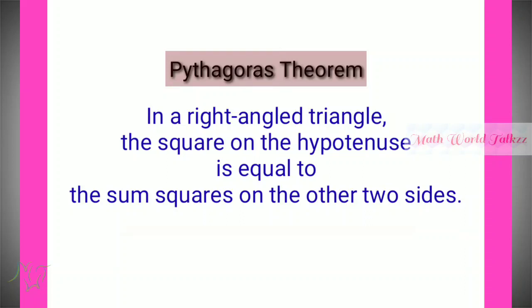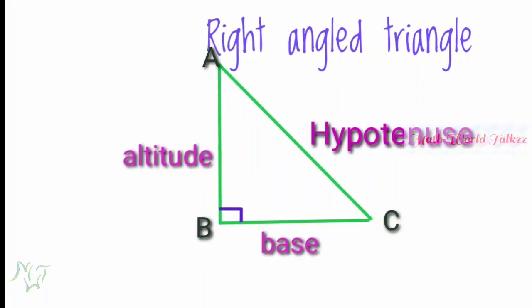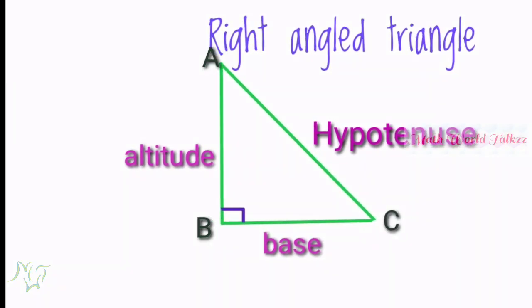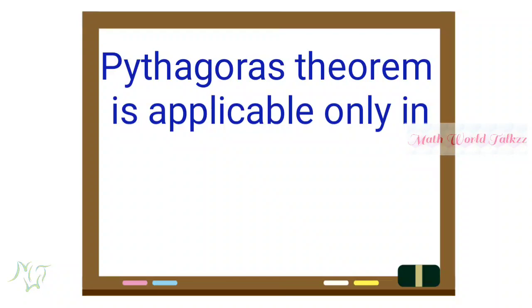This relationship is known as Pythagoras' theorem: in a right angle triangle, the square on the hypotenuse is equal to the sum of the squares on the other two sides. Here, AC is the hypotenuse, so by Pythagoras' theorem we can write AC² = AB² + BC². If two sides of a right angle triangle are given, we can find the third side using this relation. Keep in mind that Pythagoras' theorem is applicable only in right angle triangles.